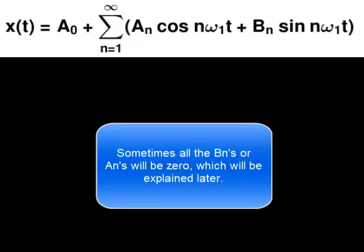Sometimes all the BNs or ANs will be zero, which will be explained later.